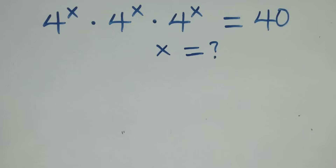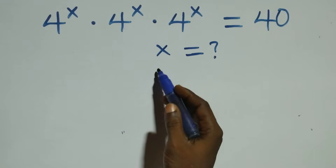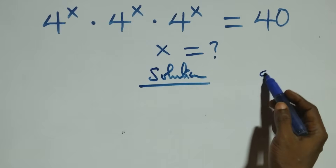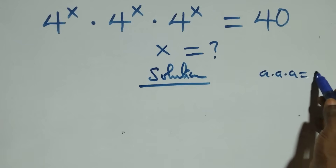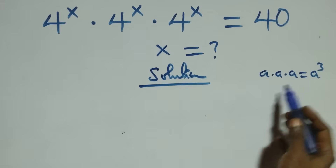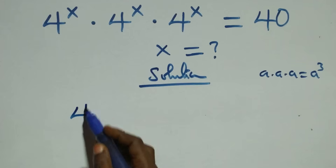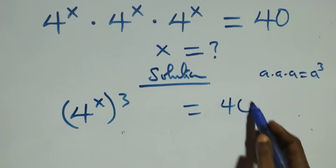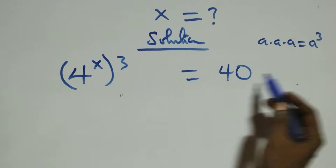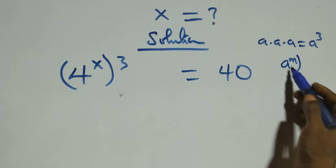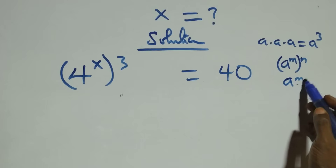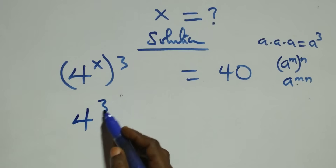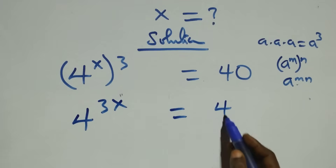Hello, you are welcome. We are going to solve this nice exponential equation. We have a times a times a, which is the same as a cubed — multiplying itself three times. We can write it as four raised to power x, then four raised to power x, times four raised to power x, raised to power three, equals forty. Applying the law of indices, this becomes four raised to power three x equals forty.